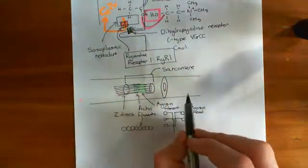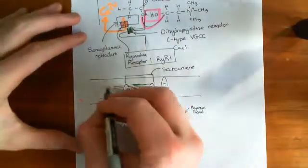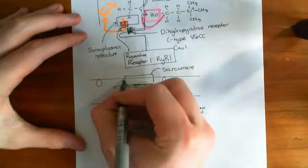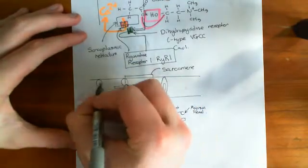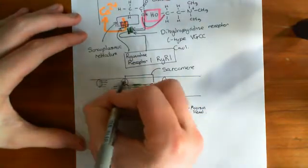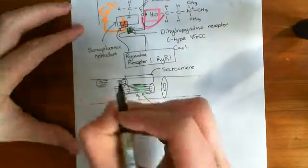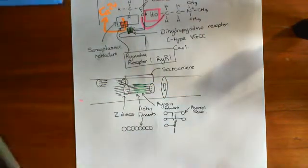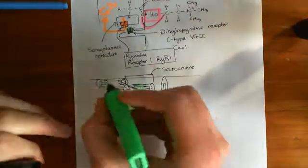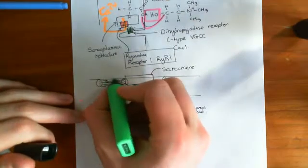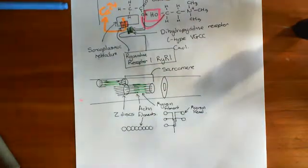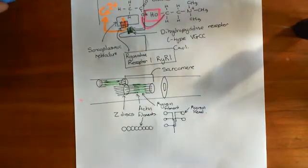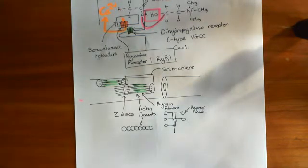Myofibrils don't just contain one sarcomere — they contain absolutely loads. So here might be another sarcomere over here. Calcium going up is going to cause them all to start contracting. And calcium going up doesn't directly stimulate them to contract; instead, what it does is inhibit the inhibition of the contraction.